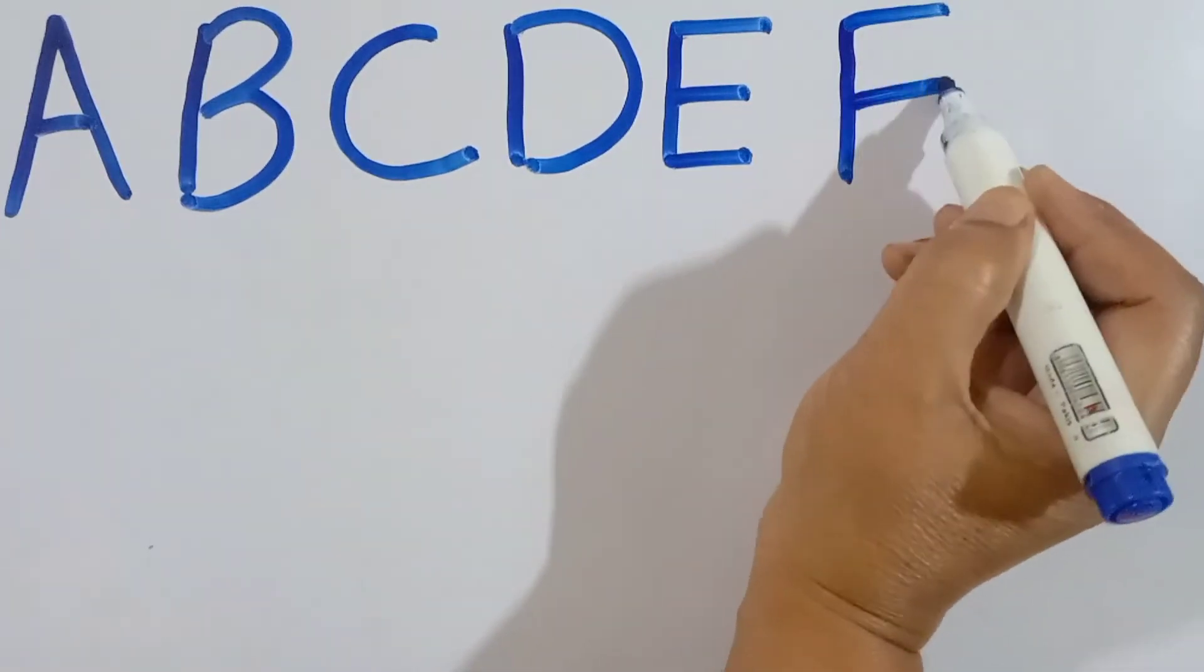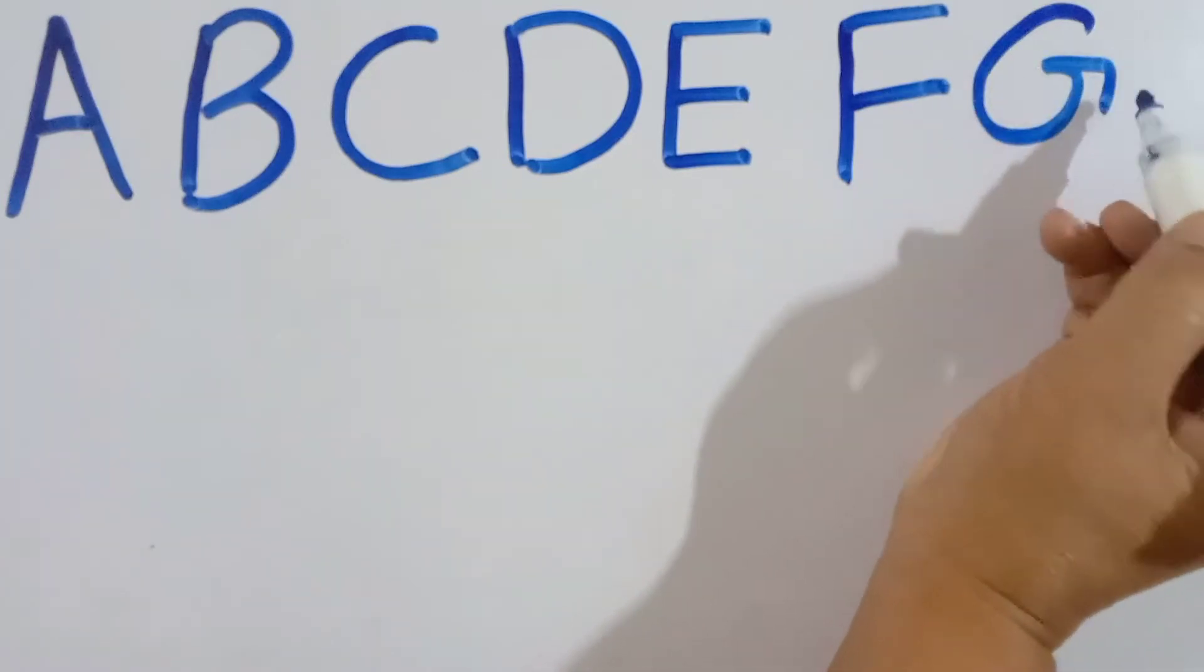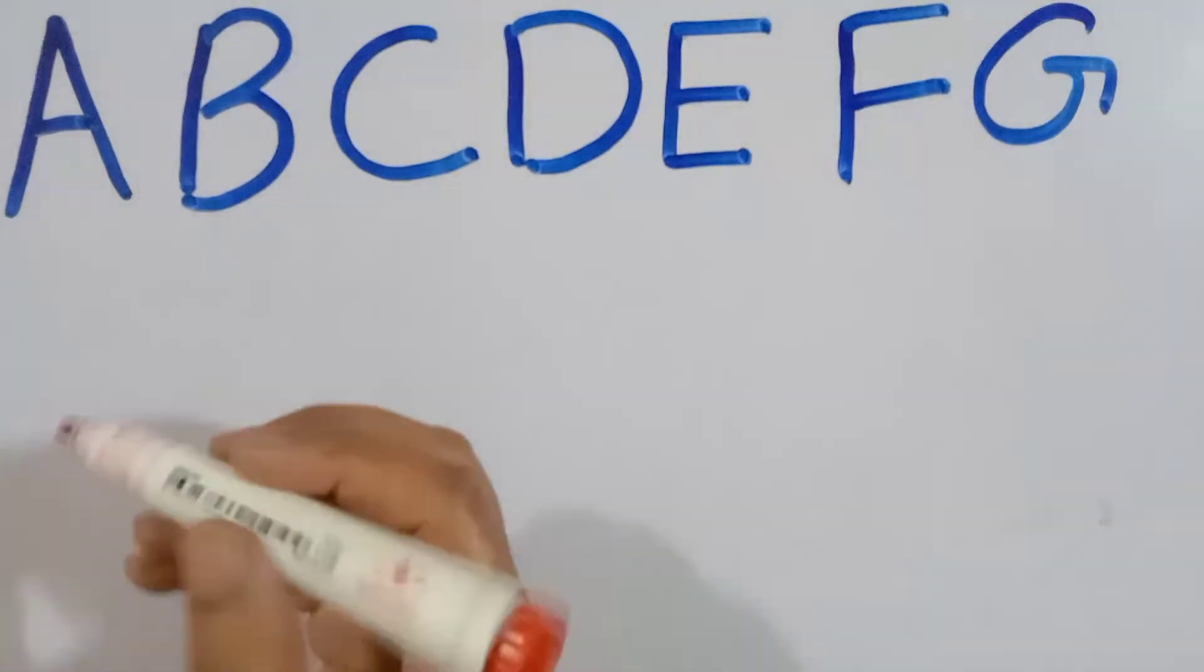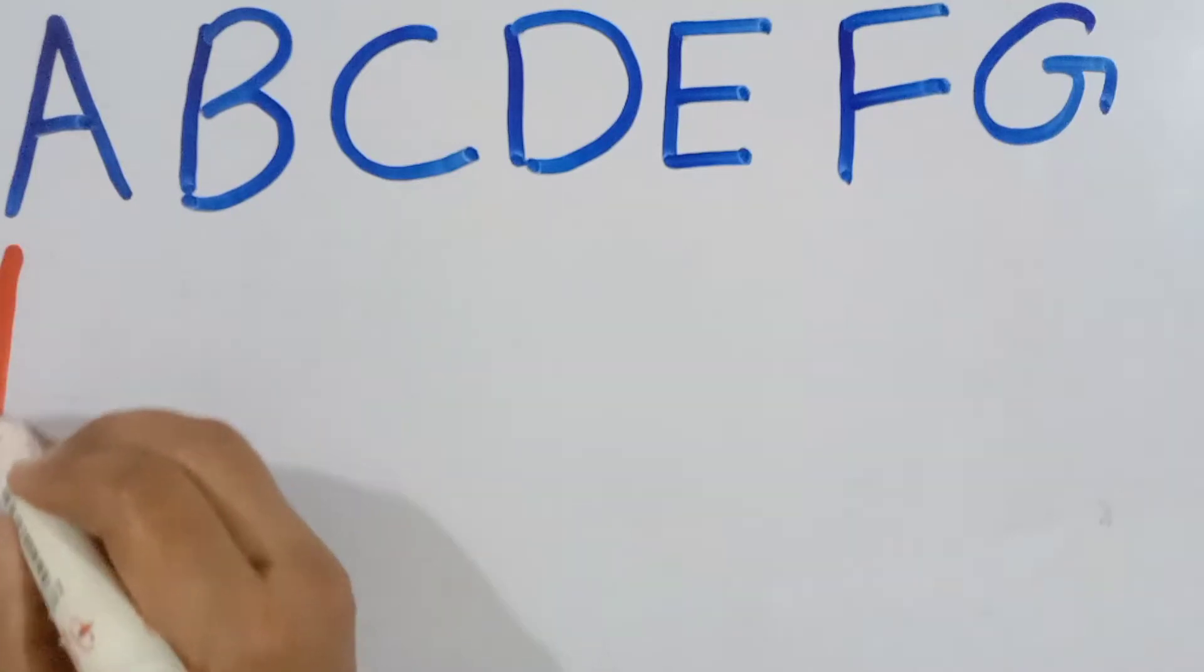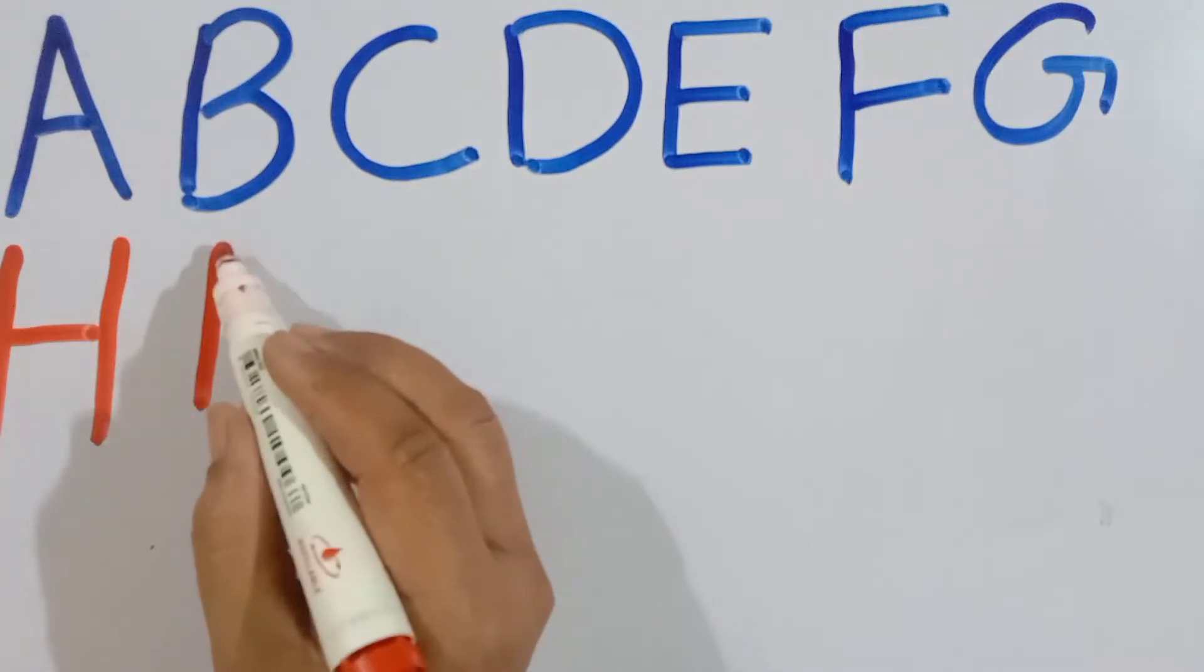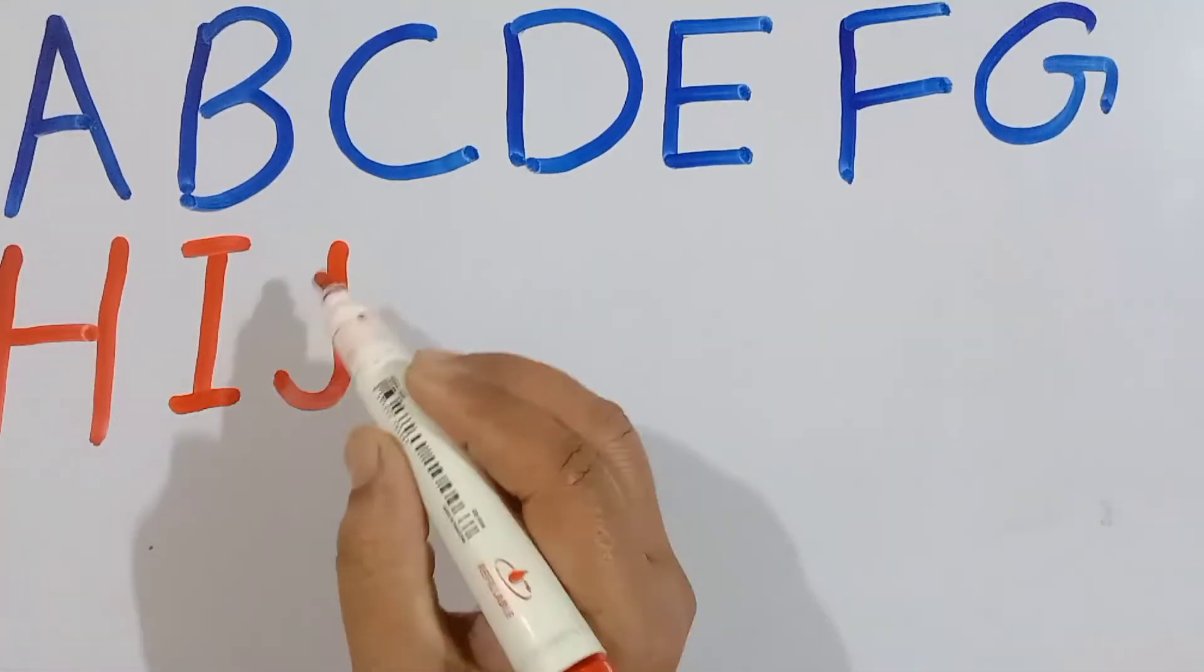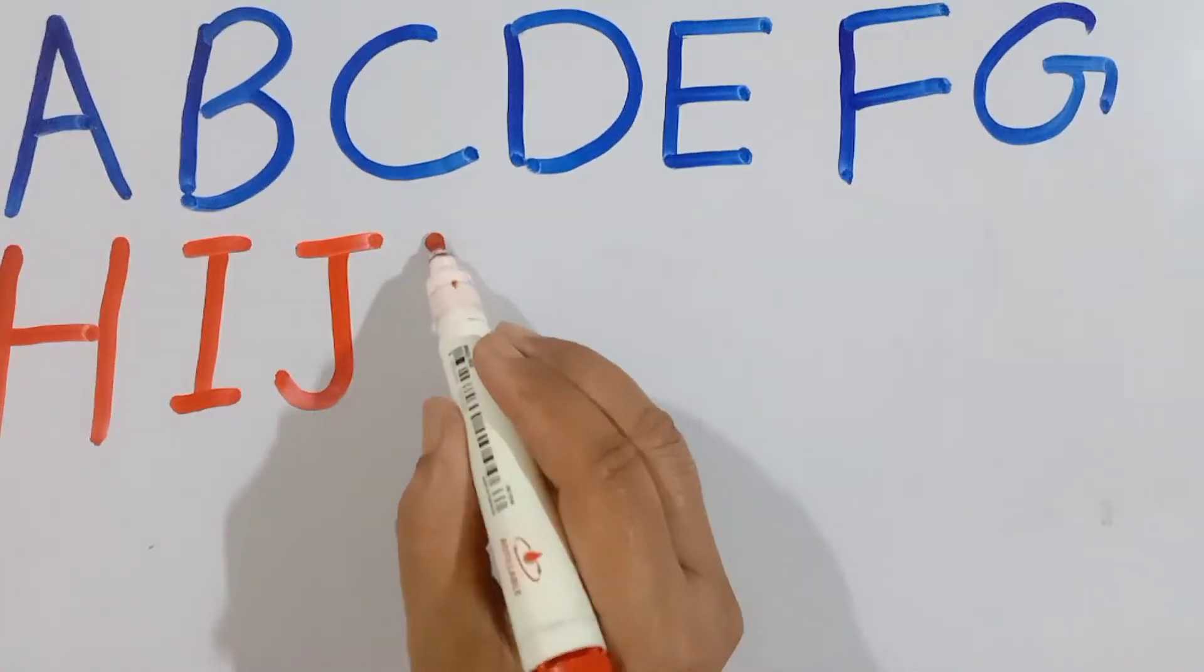A, B, C, D, E, F, G, H, I, J, K, L, M, N, O, P, Q, R, S, T, U, V, W, X, Y, and Z. Now I know my ABCs. Next time won't you sing with me?